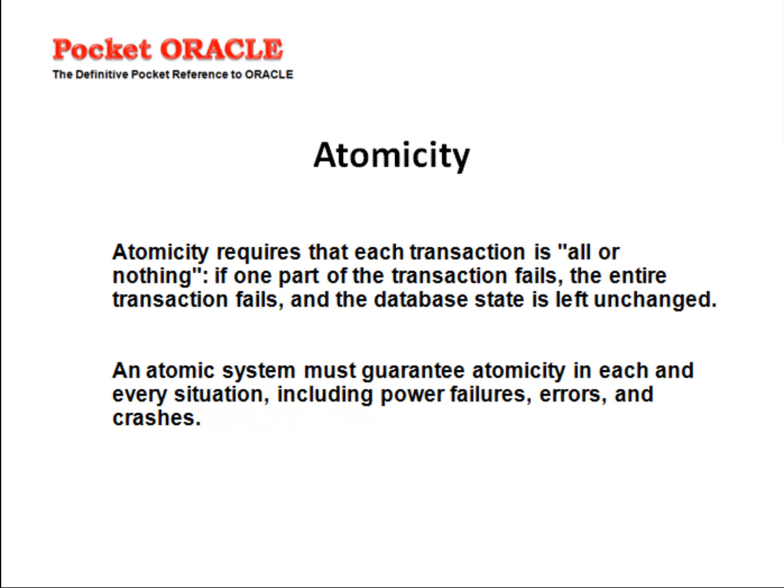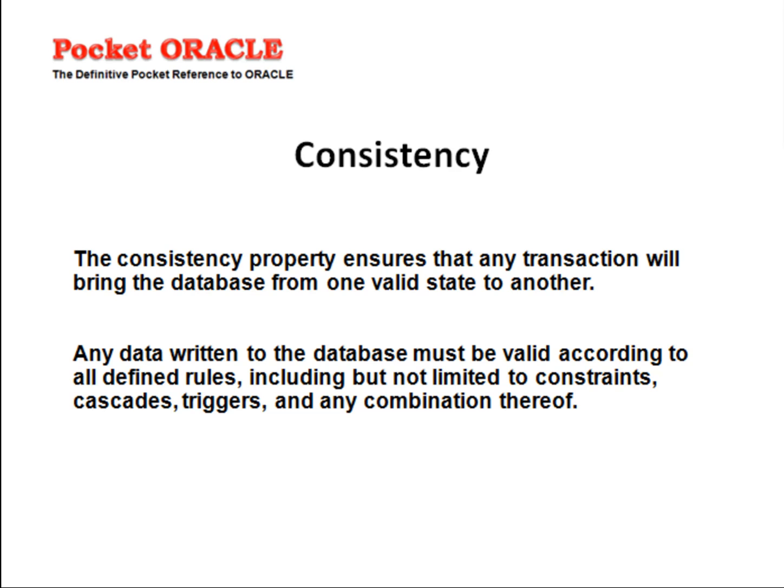Atomicity requires that each transaction is all-or-nothing. If one part of the transaction fails, the entire transaction fails and the database state is left unchanged. An atomic system must guarantee atomicity in each and every situation, including power failures, errors, and crashes. In other words, the entire transaction must commit as a unit or not at all.